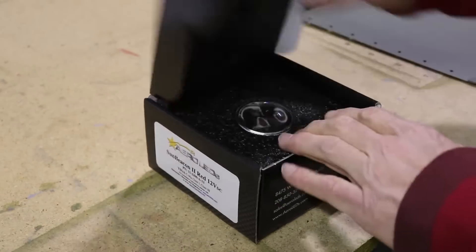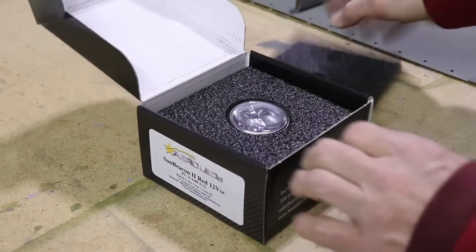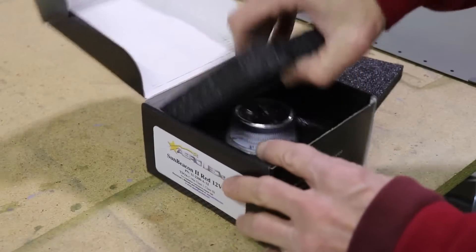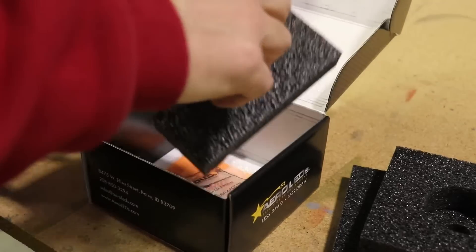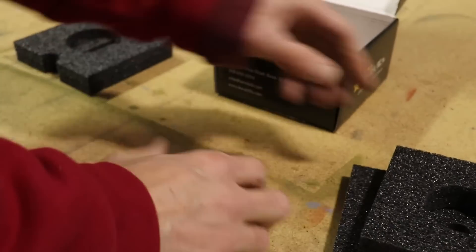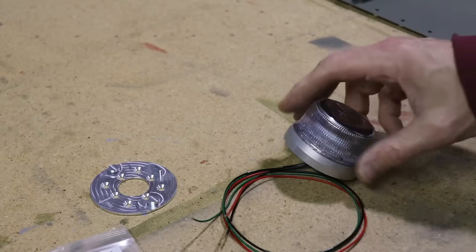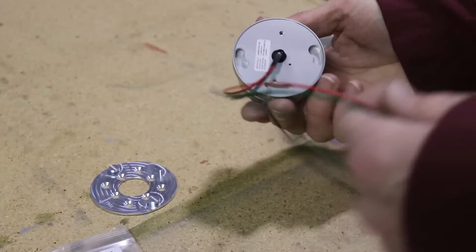This is the Sun Beacon 2 LED light from Aero LEDs. It's available in red or white, and the one I chose to install on my airplane is the red one. Now before I mount this, I wanted to show you something pretty cool.